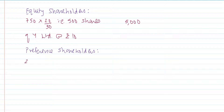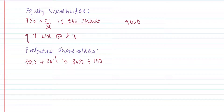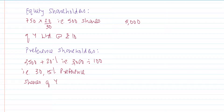In the balance sheet, the preference share capital is 2,500. We are ready to pay them 20% extra, so 2,500 plus 20% equals 3,000. Dividing 3,000 by the par value of 100 gives us 30. So we are issuing 30 fifteen-percent preference shares of Y Limited at rupees 100 each, which is worth 3,000.